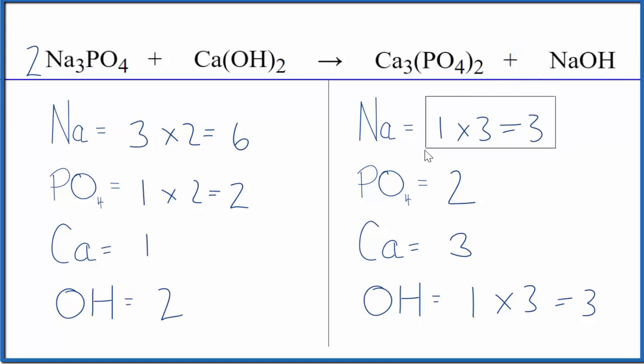We need to update these here as well. So we put a six in front of our sodium hydroxide. One times six, six sodiums. Let's update our hydroxides here. We have one hydroxide times six, that gives us six hydroxides.